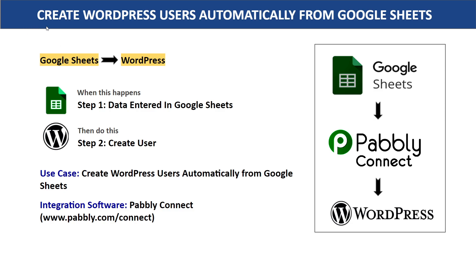In this video, we will learn how to create WordPress users automatically from Google Sheets. Imagine you are employing content writers for your WordPress website. The idea is that once you enter the details of a person in Google Sheets, they will be registered as a contributor on your WordPress website automatically, without manually copying details and assigning usernames and passwords.